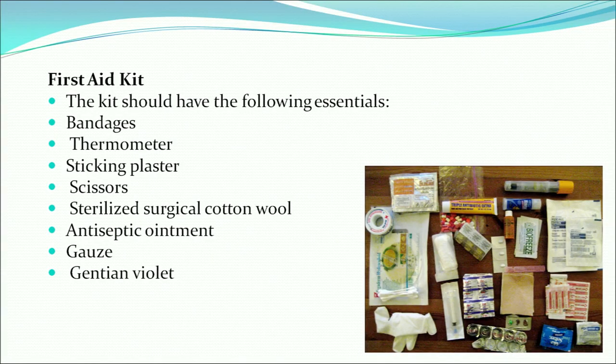It is very important that there should be a first aid kit in the play center. It should have a bandage, thermometer, sticking plaster, scissors, sterilized or surgical cotton, antiseptic ointment, gauze and gentian violet. For example, if a child has a fever, you check it with the thermometer. If a child gets hurt in the play center, the first aid kit would be used. That is why a first aid kit is a must in the play center.